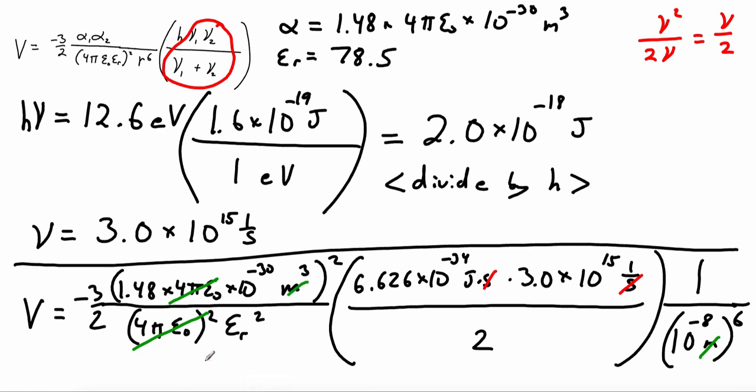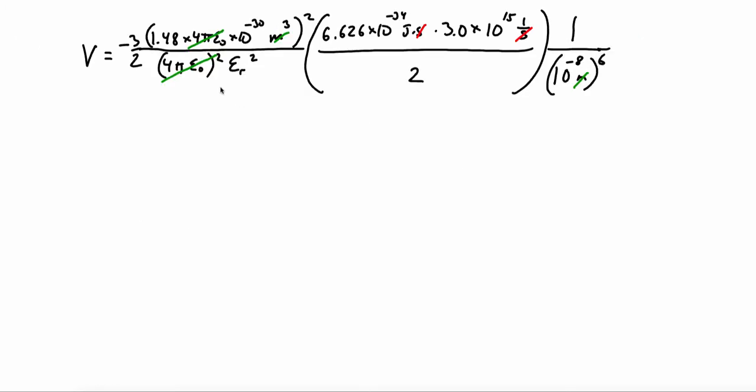And so we're left with just units of joules. We have to remember to actually plug in a numerical factor here. We're working with water, so we said this was 78.5. Let's go ahead and get the result of that calculation. So remembering that this was 78.5, we plug in the numbers. It comes out to 5.3 times 10 to the negative 34.